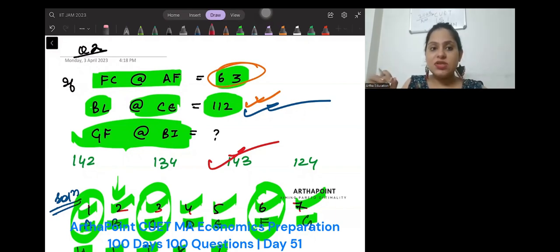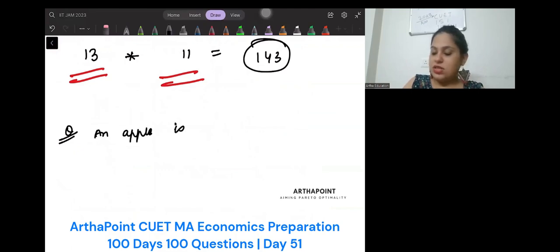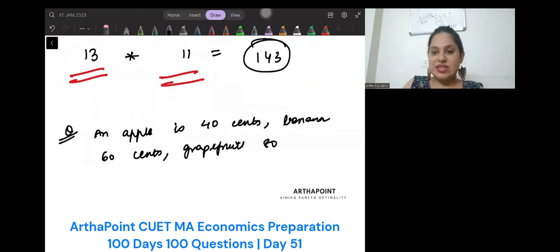So apart from this, what I want you to do is I want you to just go ahead and try this. This is a very easy one, but see if you can do this puzzle, right? Please write down: an apple is 40 cents, banana 60 cents, grapefruit 80 cents. How much is a pear? Just try to see if you can answer this question. Thank you.